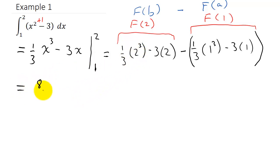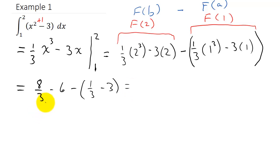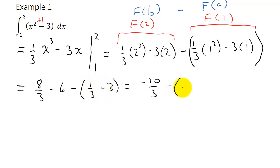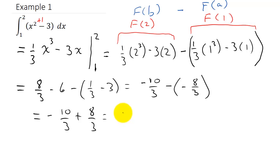Now it's just arithmetic. 2 cubed is 8, so we have 8/3 minus 6, which is 18/3, giving negative 10/3. Then 1 cubed is 1, so we subtract 1/3 minus 3, which is negative 9/3. This gives us negative 10/3 plus 8/3, which equals negative 2/3. That's our solution.